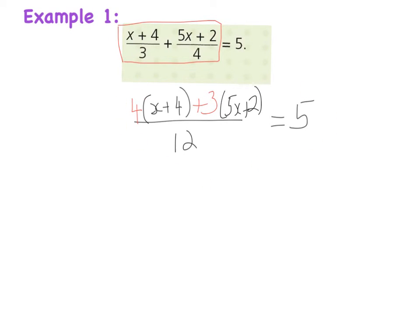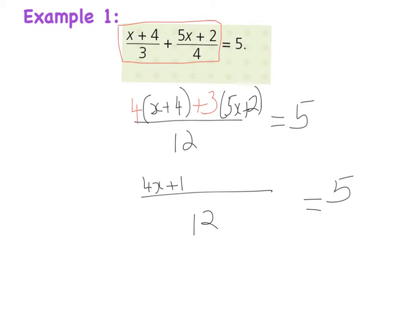That becomes step one. Step two: I work out my top line and break it down. On the bottom I still have 12, and it still equals 5. I expand the brackets: 4 multiplied by x gives 4x, and 4 multiplied by 4 gives plus 16.